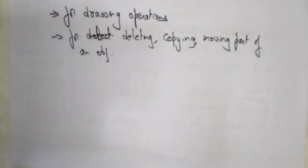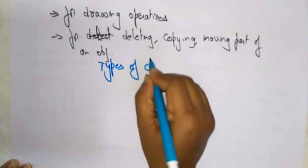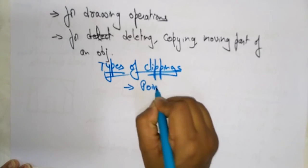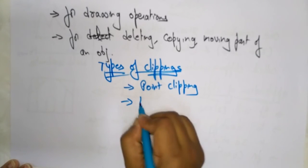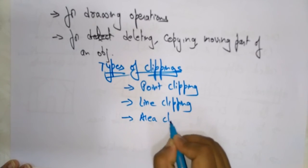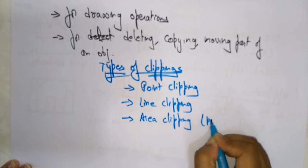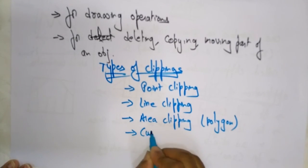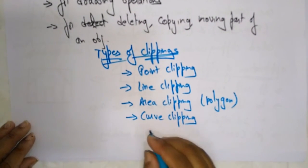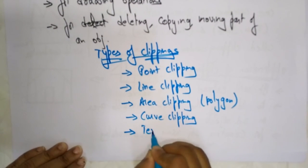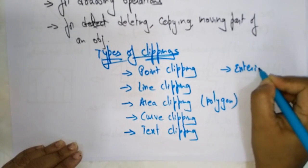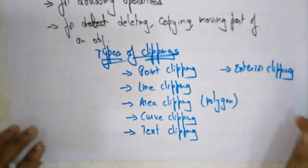Let me explain the different types of clipping. There are different types of clippings: point clipping, line clipping, area clipping — for which we use polygons — curve clipping. You can clip points, lines, polygons, and curves. Even text can also be clipped — text clipping. And there is also interior and exterior clipping. These are all the different types of clippings.